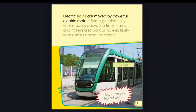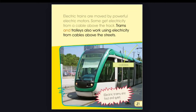Electric trains are moved by powerful electric motors. Some get electricity from a cable above the track. Trams and trolleys also work using electricity from cables above the streets. Electric trams are fast and quiet.